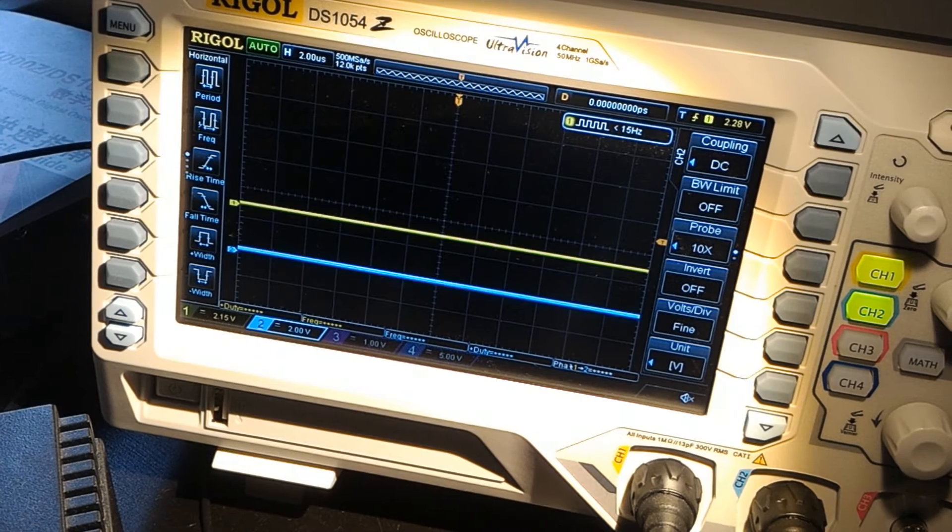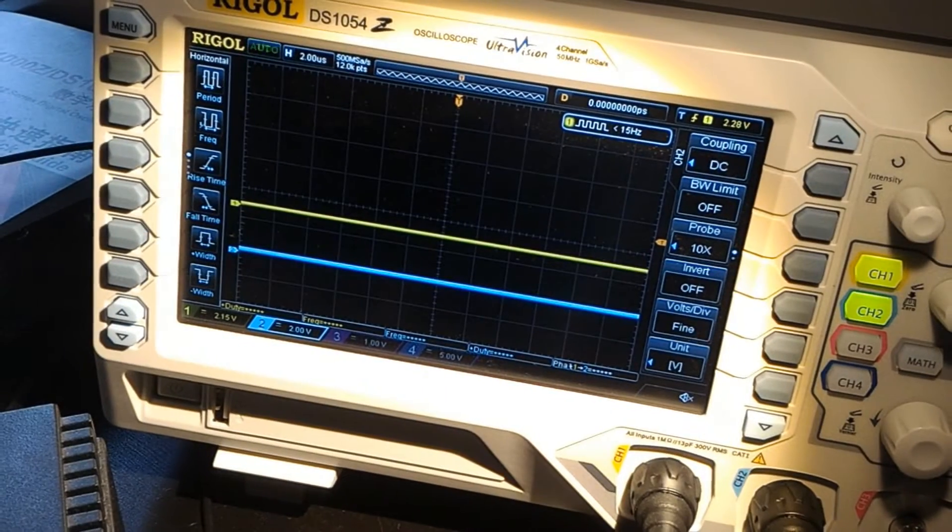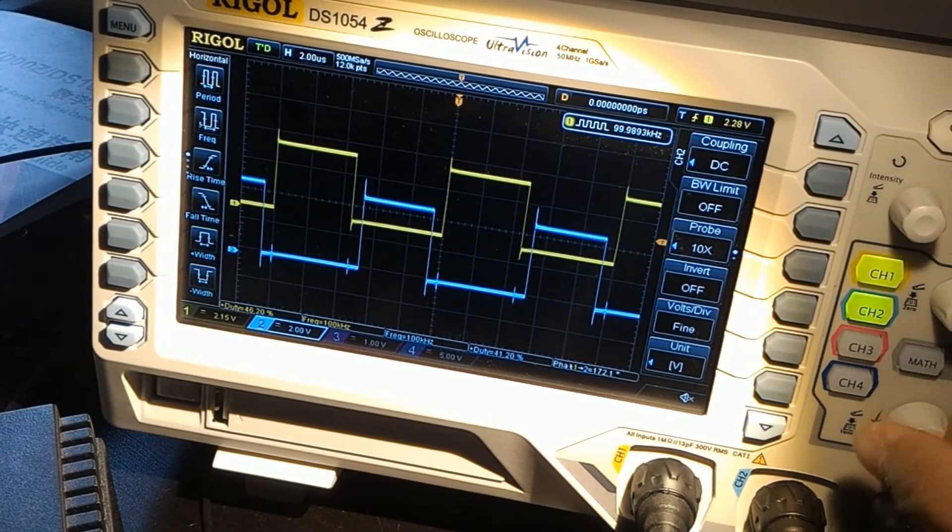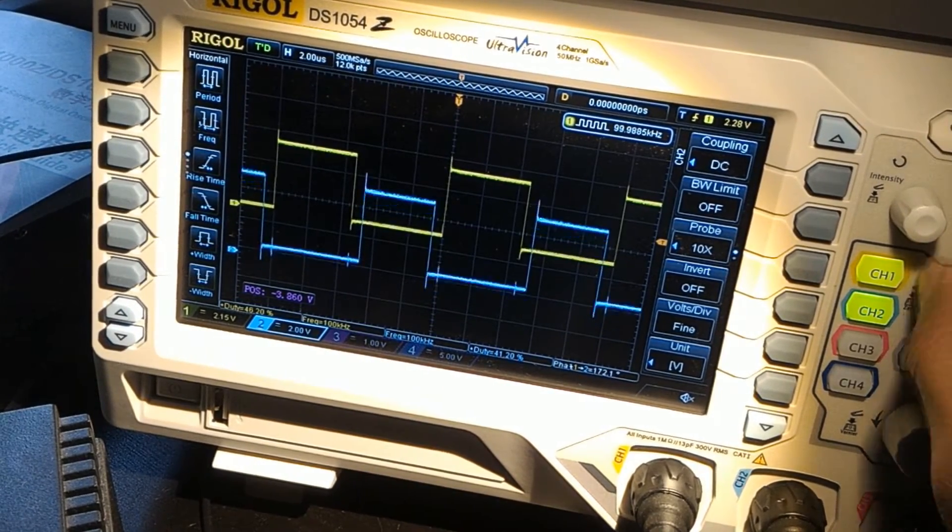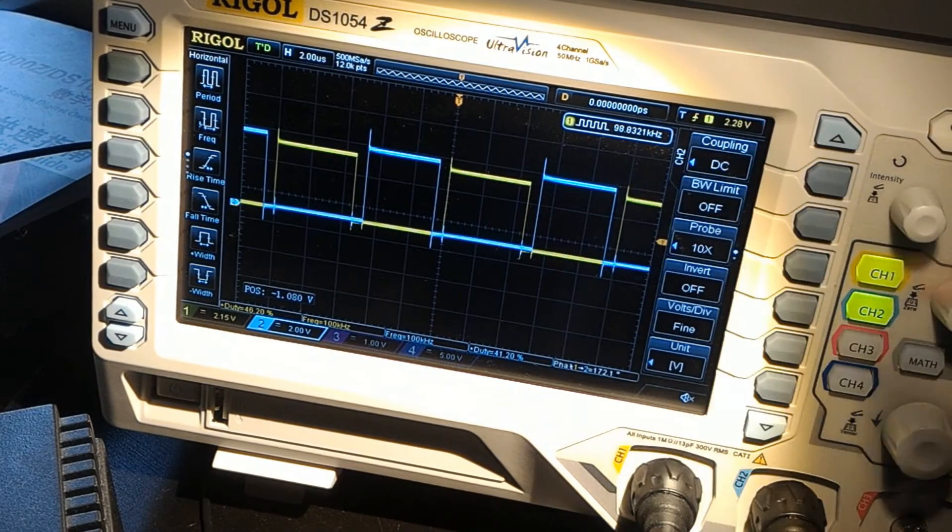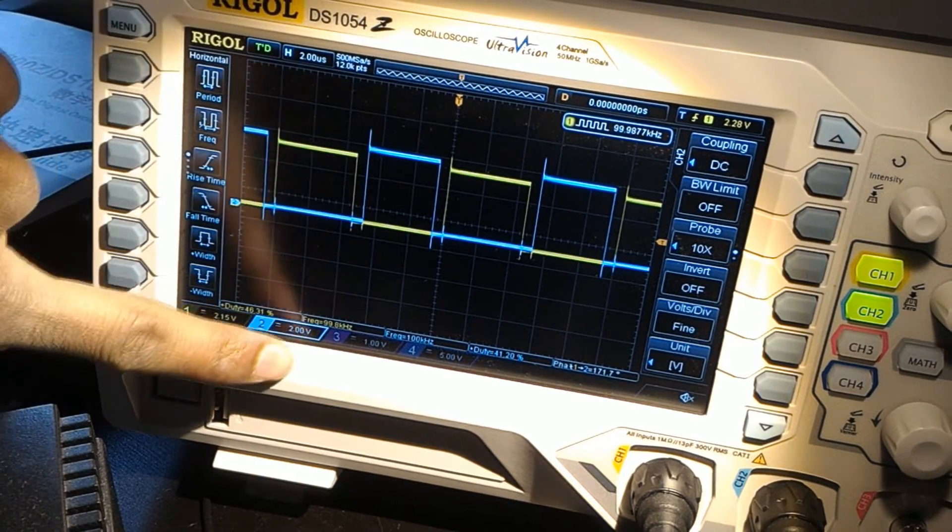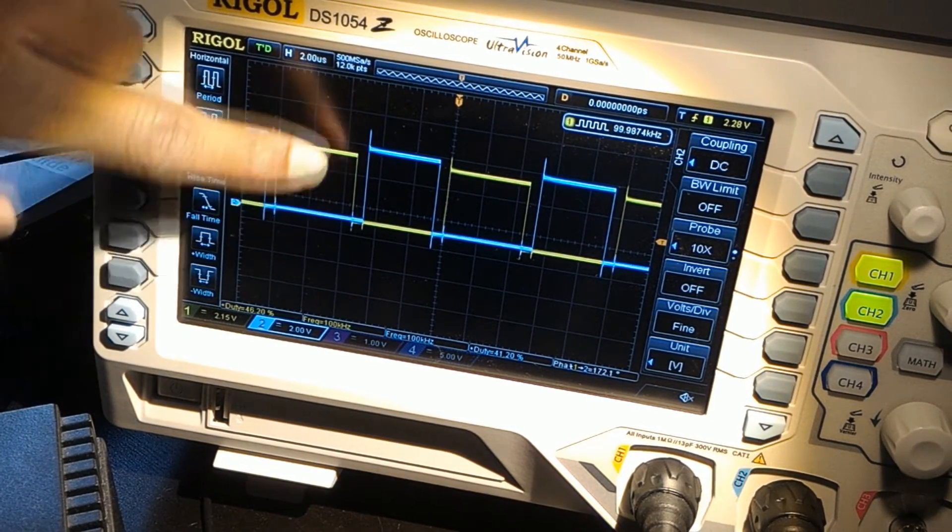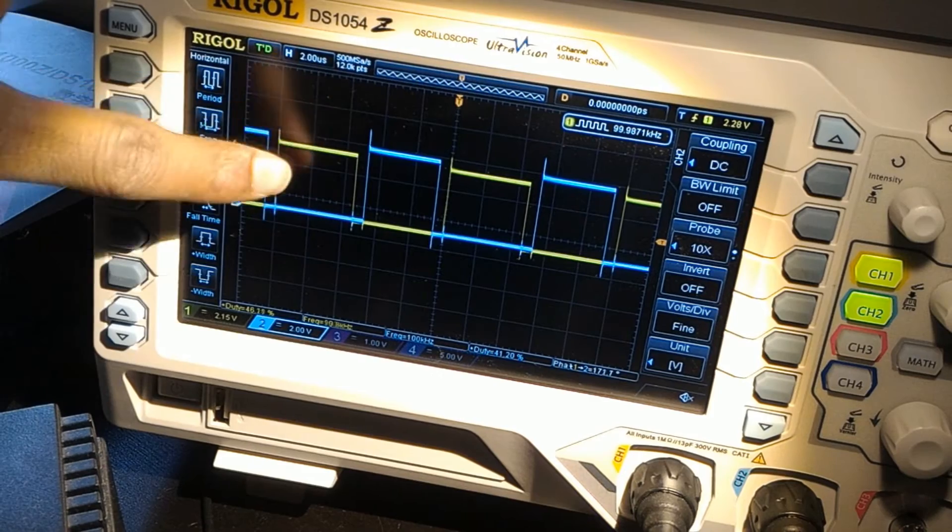Now we are going to take a look at some waveforms. If I turn on the Arduino, we will have a signal shortly. What we can see here is that we have two waveforms. They are both switching at 100 kHz, which I have programmed myself, and they are both 180 degrees out of phase from each other.